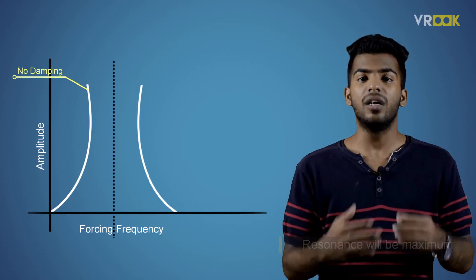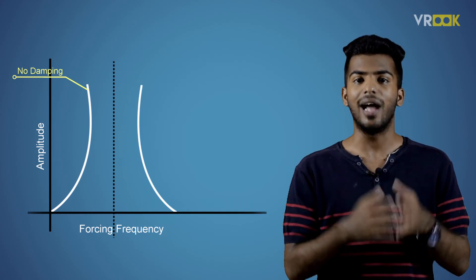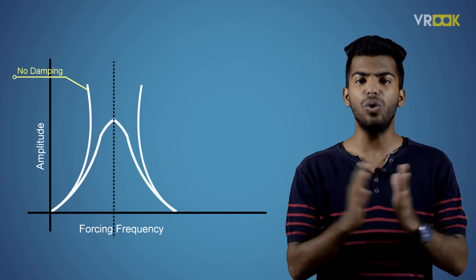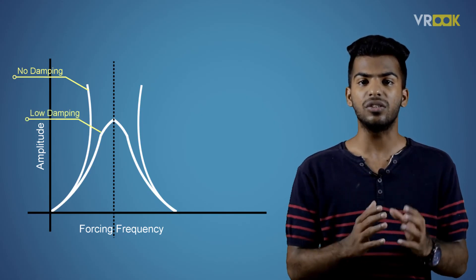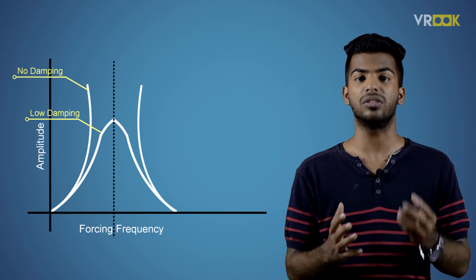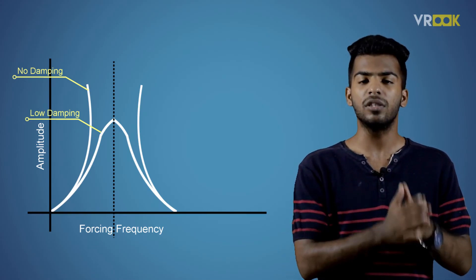We know that resonance increases the amplitude of oscillating body and damping decreases the amplitude. Under no damping condition, the resonance will be very sharp. But as all the vibrations encounter some amount of damping, the sharpness will be reduced.